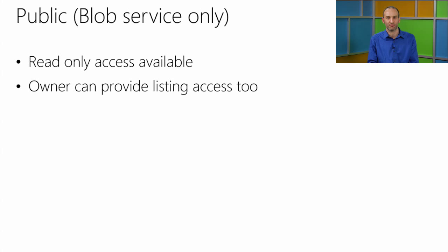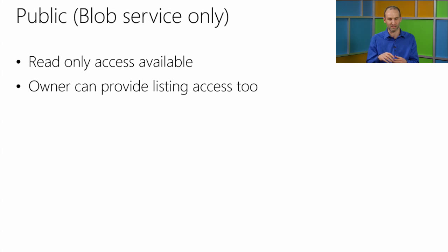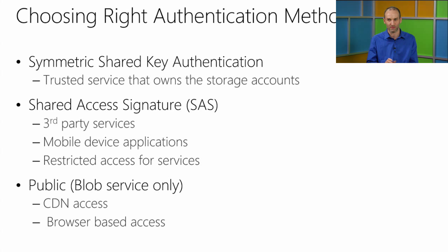Public access for blobs lets you turn a storage account container — which may have many blobs — to public access, meaning someone without an authentication signature is allowed to read that data. You can also provide listing access. This is commonly used for cases like storing small bitmaps on a website that customers can link to directly via a web address.